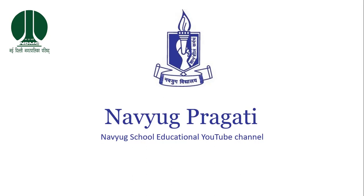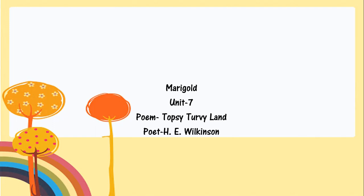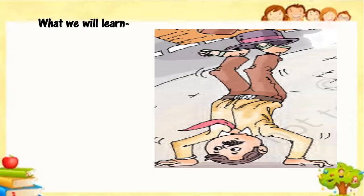Hello and welcome to Naviuk School Educational YouTube channel Naviuk Pragati. This video is for English in class 5. In this video we are going to learn a poem from Unit 7. The name of the poem is Topsy-Turvy Land and the name of the poet is H.E. Wilkinson. First of all, let's see what we will learn in this video.